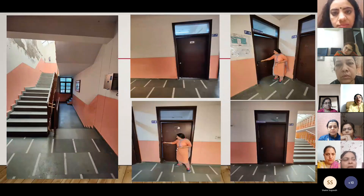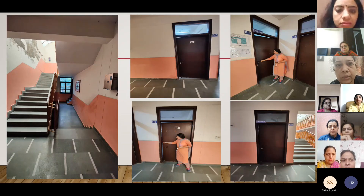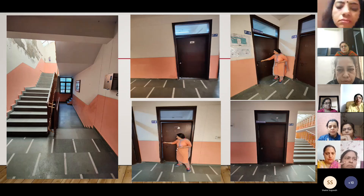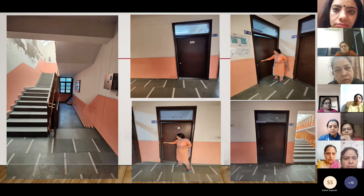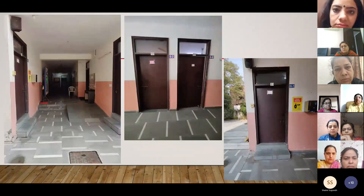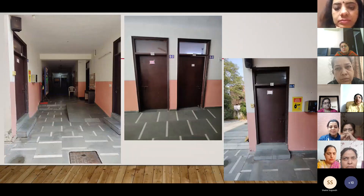Students coming from upstairs will exit from the principal's office, which is at the ground floor. There are two exit routes at the ground floor: students from the left side classrooms will take an exit through the ramp, whereas students from the right side classroom will be directed towards a small flight of two stairs.